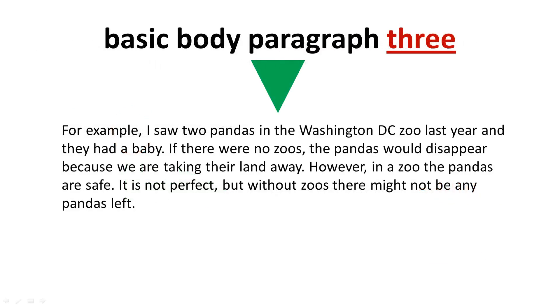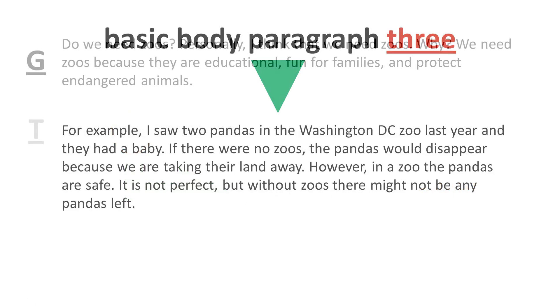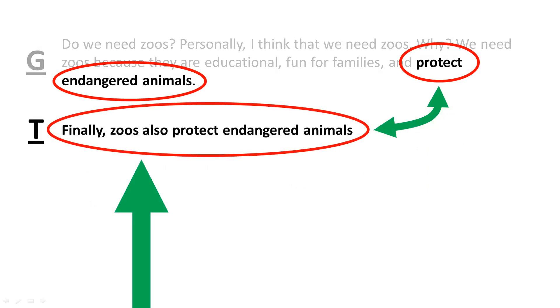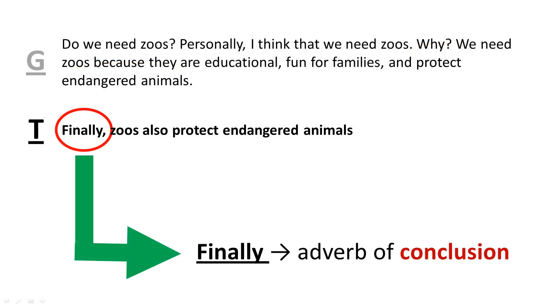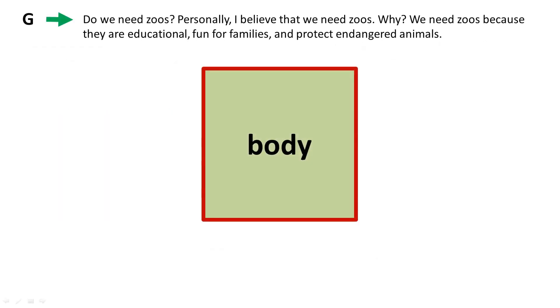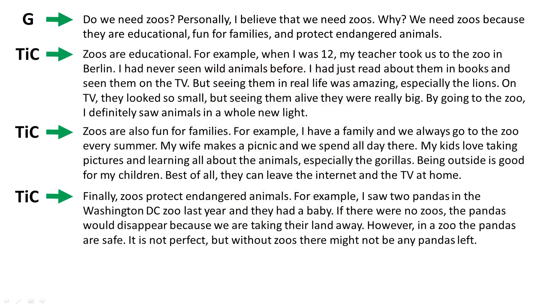I repeat the same process for basic body paragraph 3. From the third reason in the general statement, I create a topic sentence at the start of body paragraph 3. Note the word 'finally,' an adverb of conclusion, and the word 'also,' an adverb of addition. Next, I add the three body paragraphs to my essay. Pause here to read the advanced essay so far.